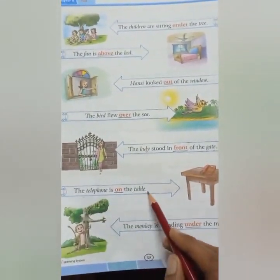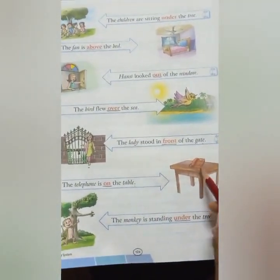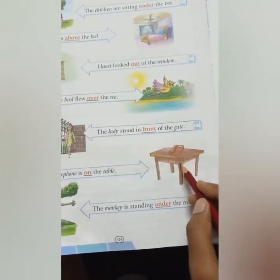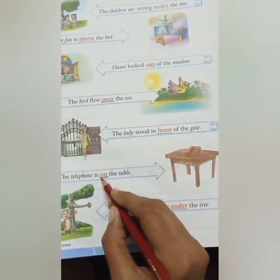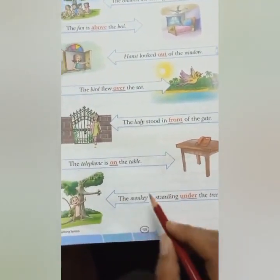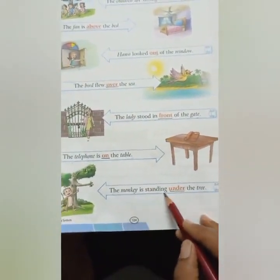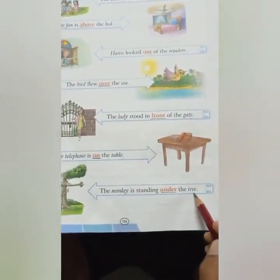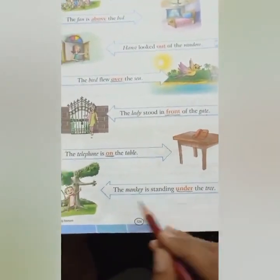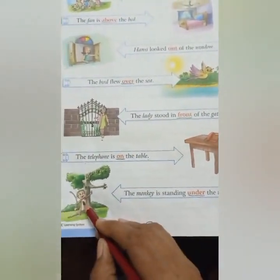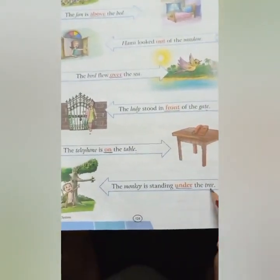The telephone is on the table. Telephone is on the table — 'on' is telling about the position of the phone. Next: the monkey is standing under the tree. Again, 'under' is telling about the position of the monkey — where the monkey is standing, under the tree.